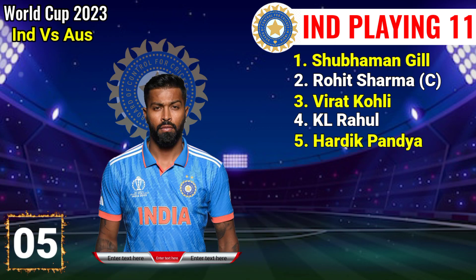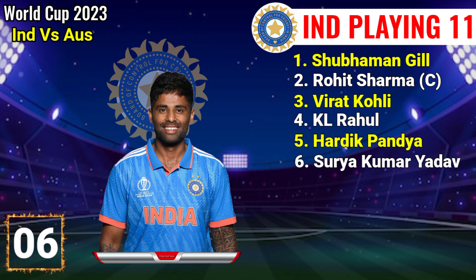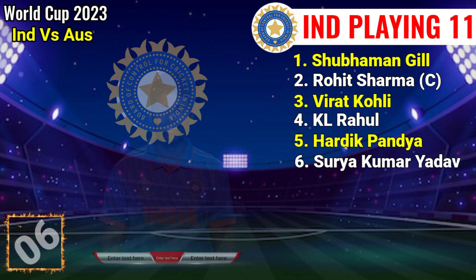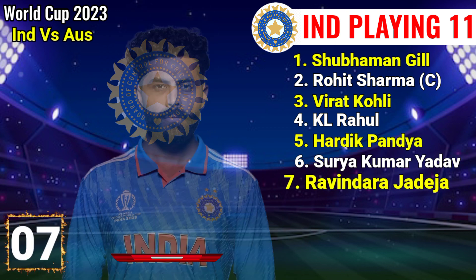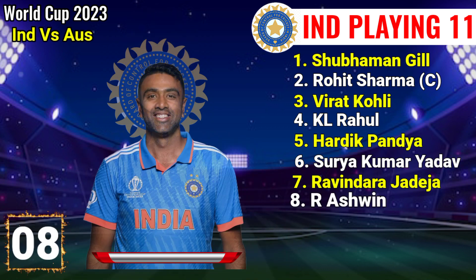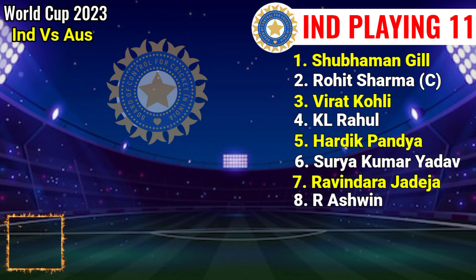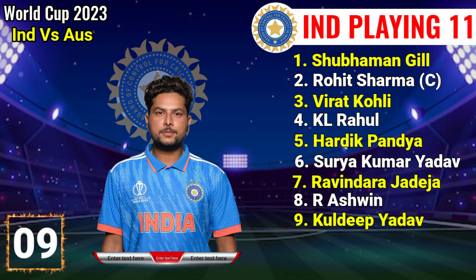Number 5: Hardik Pandya, right hand all-rounder. Number 6: Surya Kumar Yadav, right hand batsman. Number 7: Ravindar Yadav, left hand all-rounder. Number 8: Rabind Chandra Naswine, right hand all-rounder.